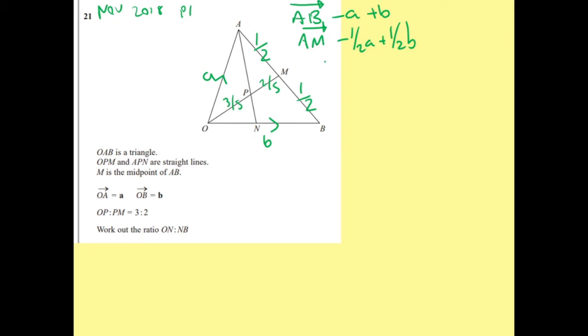OM I can probably work out now. So OM is going to be A minus half A plus half B because this is OA and then AM. To put it together, I still get half A plus half B.